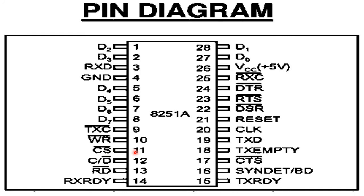Pin number 12 is C/D bar (control or data). When the signal is high, the control register or status register is addressed. When it is low, the data buffer is addressed. The control register and status register are differentiated by write and read signals respectively. Pin number 10 is the write signal — when it is low, the CPU writes data into the Intel 8251. Pin number 13 is the read signal — when it is low, the CPU reads data from the Intel 8251.